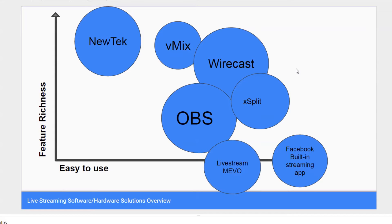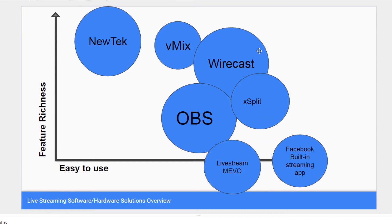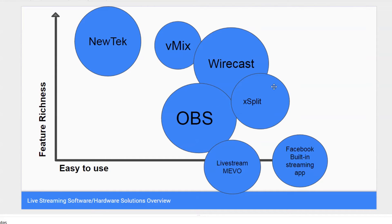Wirecast is based in California, which makes support great, and it has a huge user base — many churches love using it. It's easier to use than vMix; the interface is more intuitive. It supports both Mac and PC, which gives it a larger user base. If you use a Mac, Wirecast is probably your best option. You can do almost everything in Wirecast that you can in vMix, and it even has NDI integration options.